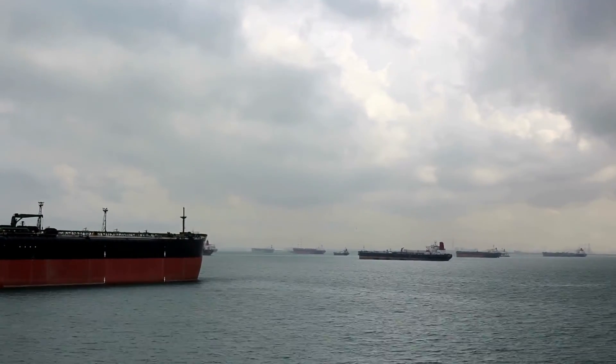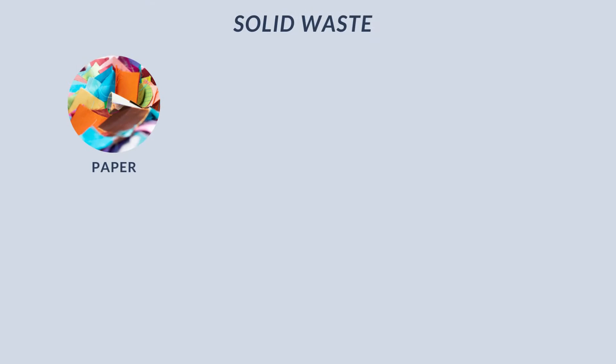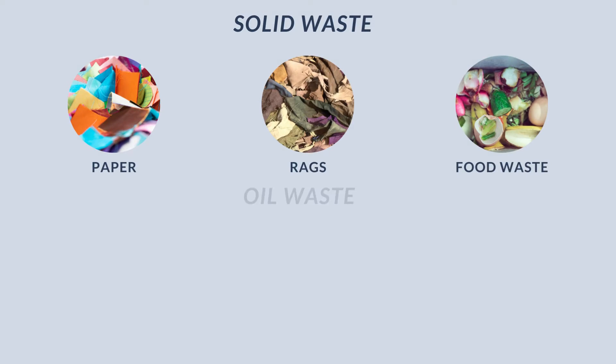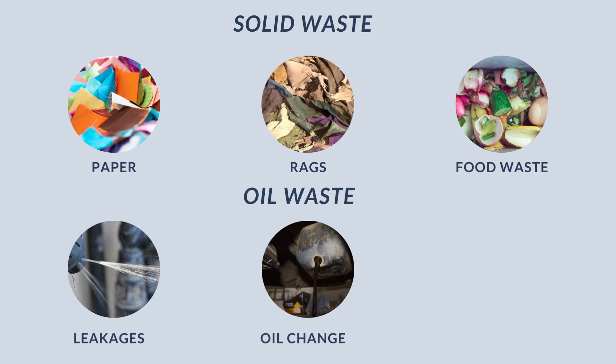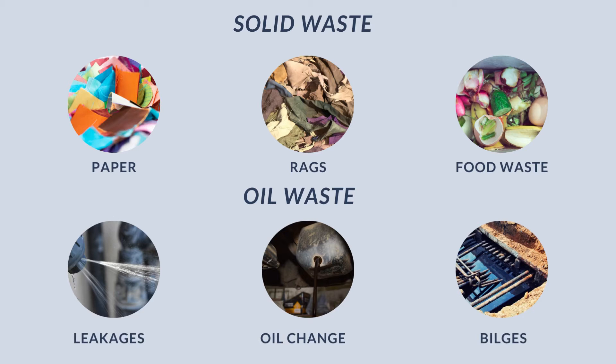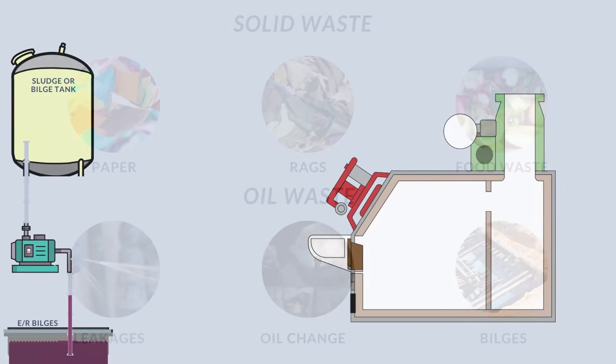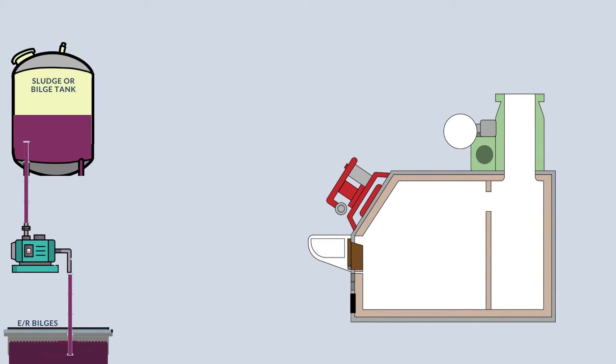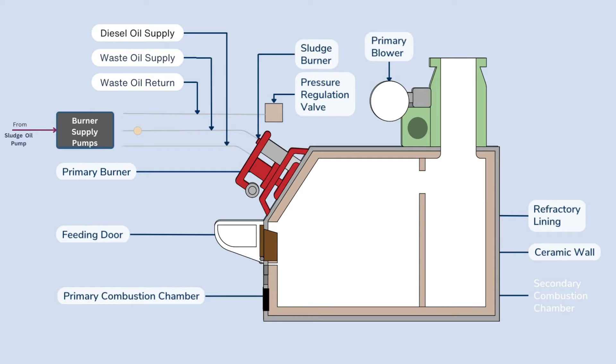Solid wastes consist of paper, rags, etc., and oil wastes usually come from leakages, oil changes, machine cleaning, bilges, etc. This waste oil is collected from the ship's machinery spaces and stored in waste oil tanks. The suction of this tank is connected to a waste or sludge oil pump which sends the oil to the waste oil burner.